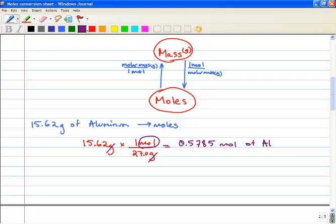Now, sig figs will round to 0.579 moles, and that was going from mass to moles.